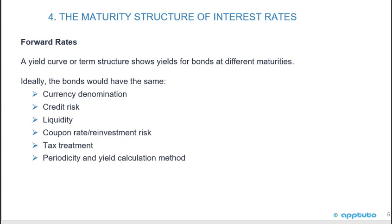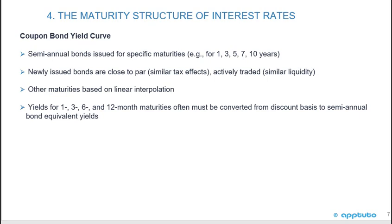The yield curve or term structure shows yields for bonds at different maturities. Ideally, the bonds would have the same currency denomination, credit risk, liquidity, coupon rate, reinvestment risk, tax treatment, and periodicity and yield calculation method. For the coupon bond yield curve, we look at semi-annual bonds issued for specific maturities — for example, 1, 3, 5, 7, and 10 years. Newly issued bonds are close to par with similar tax effects and are actively traded with similar liquidity. Other maturities are based on linear interpolation. Yields for 1, 3, 6, and 12-month maturities often must be converted from discount basis to semi-annual bond equivalent basis. Less than 1 year is money market, often quoted on a discount or add-on rate basis, and must be converted to a semi-annual bond equivalent yield.